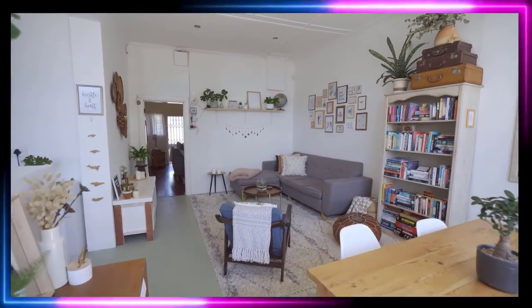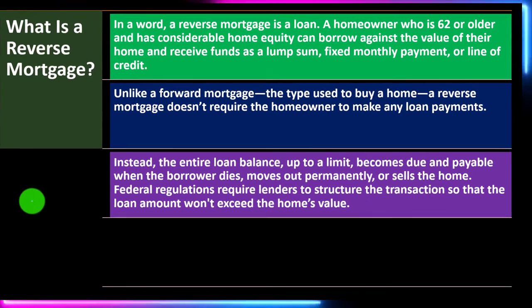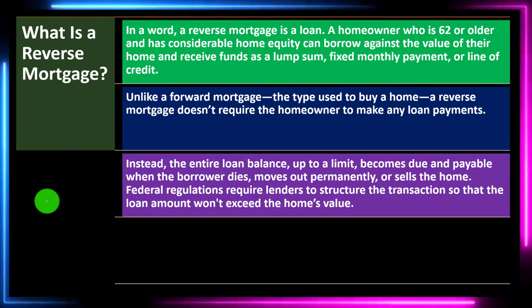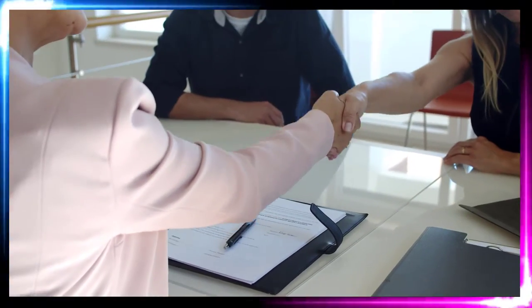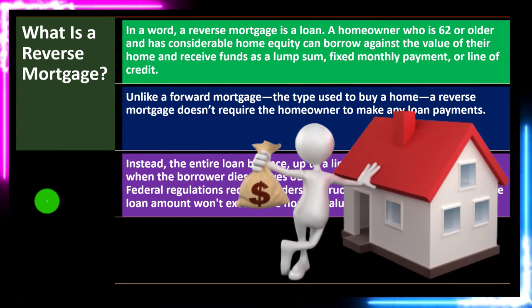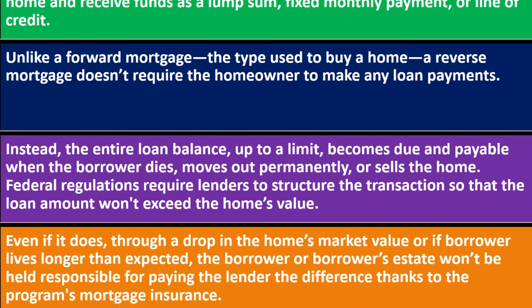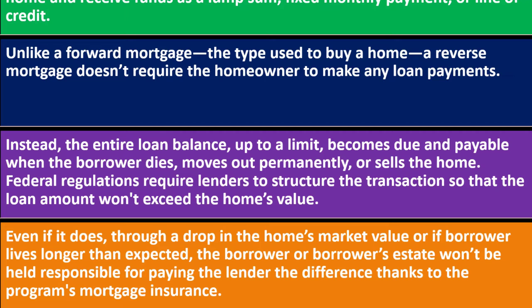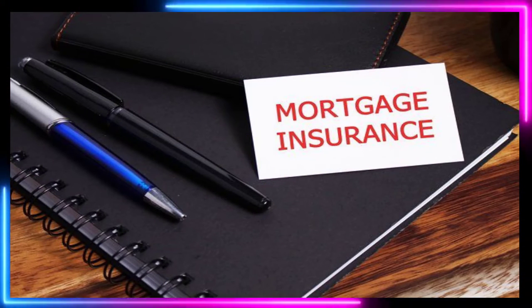Federal regulations require lenders to structure the transaction so the loan amount won't exceed the home's value — because if the loan value goes above the home's value, the borrower is less invested and more likely to walk away. Even if a drop in market value occurs or the borrower lives longer than expected, the borrower or their estate won't be held responsible for paying the difference, thanks to the program's mortgage insurance.